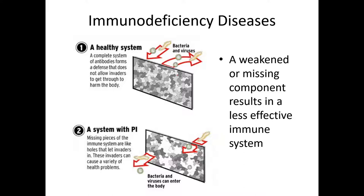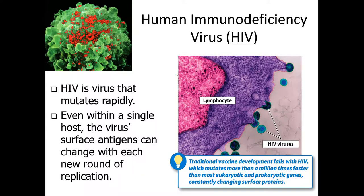Moving on to immunodeficiency diseases — weaknesses in the immune system. If part of your immune system is weak or missing, it becomes easier for infections to get in and cause trouble. We'll focus on one example: HIV, the virus that can lead to immune deficiency. It's short for human immunodeficiency virus. HIV changes extremely rapidly — up to this point we've been unable to create a successful vaccine for it.